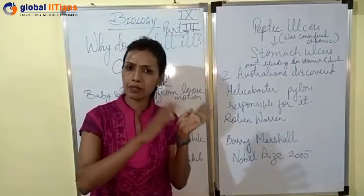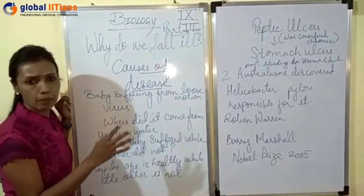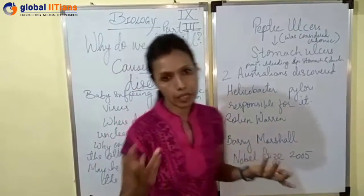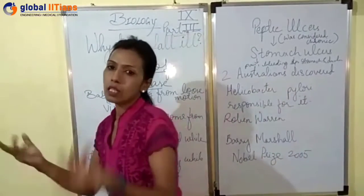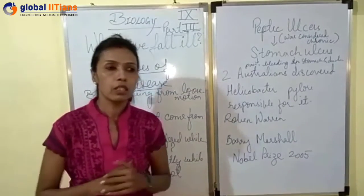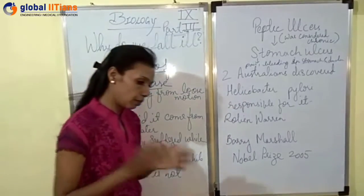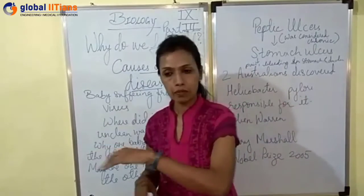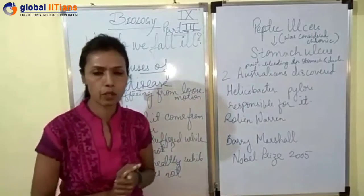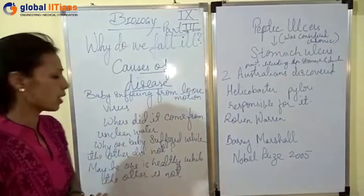It can be a bacteria, it can be a fungi. Say for example the baby is suffering from a viral infection. The next immediate question will be: where did the virus come from? The answers would be multiple — maybe due to contaminated water, unclean water or unclean food. So why then is one baby suffering from this disease and not the other, if the other baby is also fed with the same food and water?